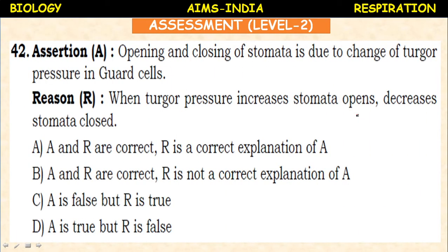Next question. Assertion — opening and closing of stomata is due to change of turgor pressure in guard cells. Reason — when the turgor pressure increases, stomata opens; when it decreases, stomata closes. The assertion is correct. Both assertion and reason are correct and the reason is the correct explanation of the assertion.